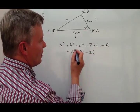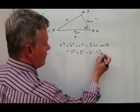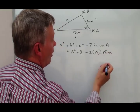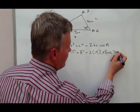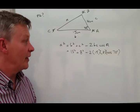minus 2 times B again, 15 times C, which is 8 times the cosine of 70 degrees. OK. Hopefully you can see that OK on the video.